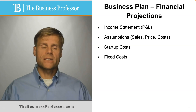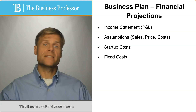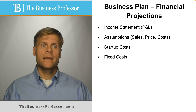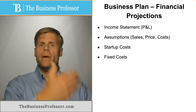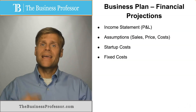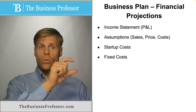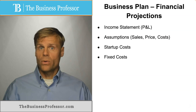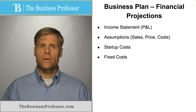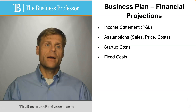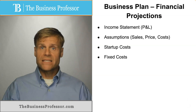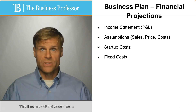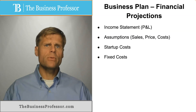Next, identify your fixed costs — the things you're going to incur as a cost no matter what. These are usually things like a mortgage or rent for an office, repayment of a loan, equipment payments, subscriptions, annual payments for licensure — things that remain the same whether you make any sales or not. You're going to incur those whether you have one customer or a million.